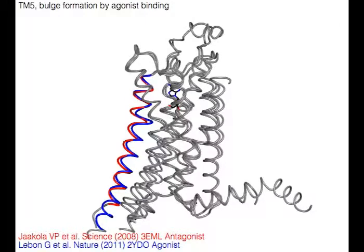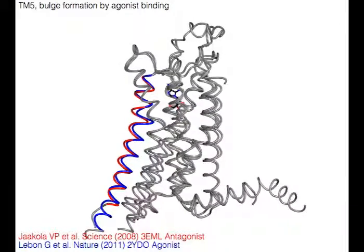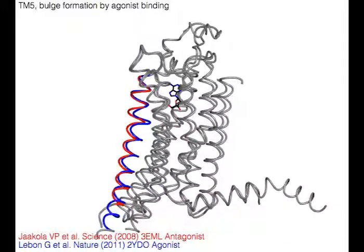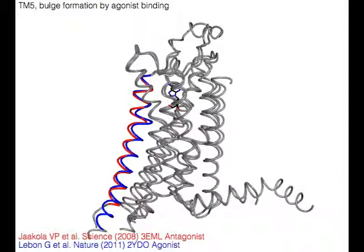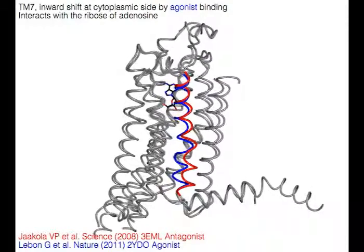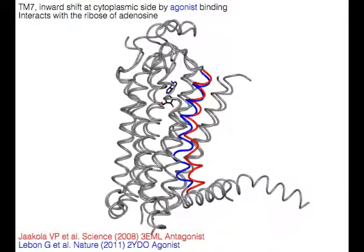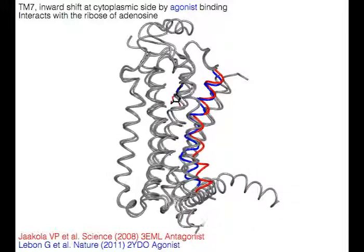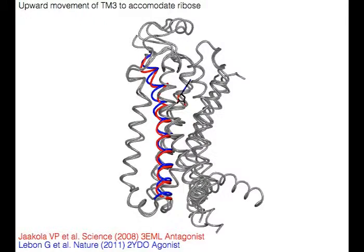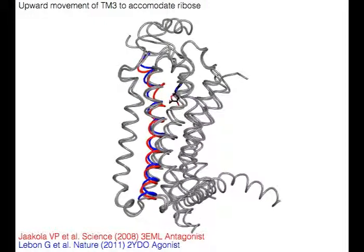TM5 forms a bulge upon agonist binding, as shown in red. TM7 makes a seesaw movement and shifts inward at the cytoplasmic side upon agonist binding, as shown in red, and also interacts with the ribose of adenosine. TM3 moves upward to accommodate the ribose upon agonist binding, as shown in red.